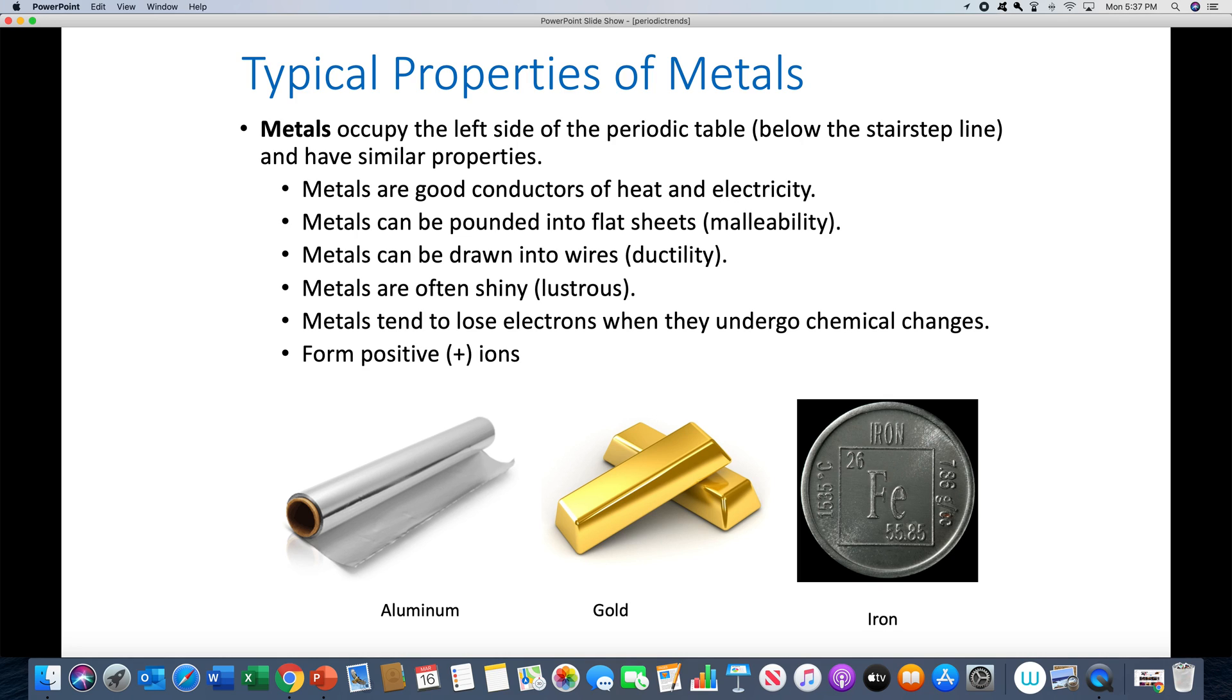They're excellent conductors of heat. They can be pounded into flat sheets, so malleability. Malleable has the same prefix as mallet, like a hammer. They can be drawn into wires - that's called being ductile. All metals are shiny. And when you look at a lot of metals, they don't look shiny. The reason they don't look shiny is a lot of metals react with oxygen in the air to form metal oxides. Frequently, they do it very quickly, very readily. Metal oxides are typically black, white, or gray, so they're not really that shiny color. But if you took a piece of sandpaper to it and sanded it off, you would find that the shiny metal is underneath.